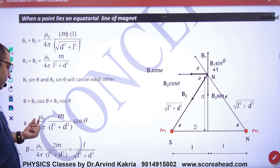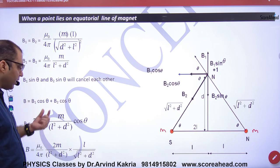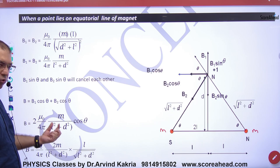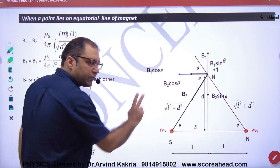2 into mu naught by 4 pi, M by under root of L square plus d square whole square, into cos of theta.